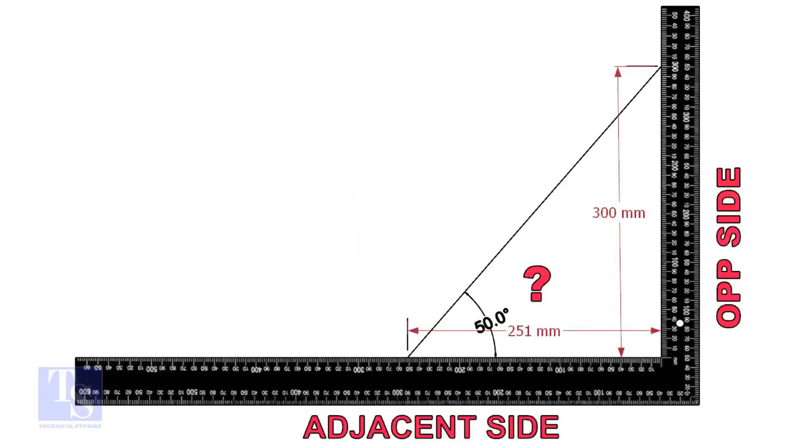Let us learn some tan rule calculation. Tan degree is equal to opposite side divided by adjacent side. For this formula, we know only the tan degree. Let us assume the opposite side is 300 mm. But you can take any suitable dimension as required.